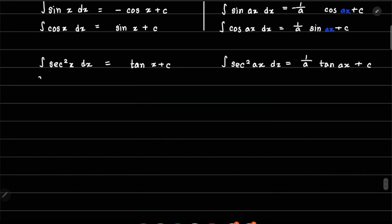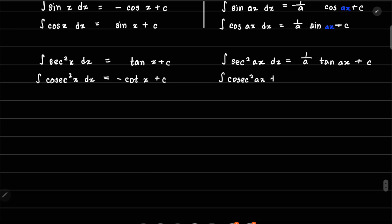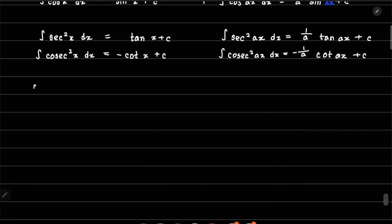Similarly, cosec x is 1 by sin x, so cosec²x is 1 by sin²x. Integrating cosec²x gives minus cot x plus C, where cot x is 1 by tan x or cos x by sin x. If there is a constant, the integral of cosec²(ax) dx is minus 1 by a times cot(ax) plus C.